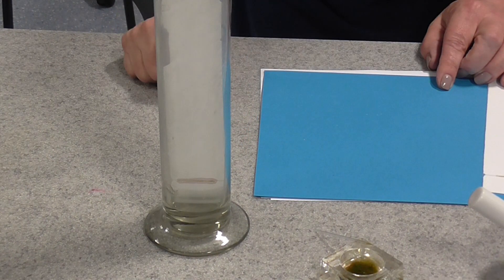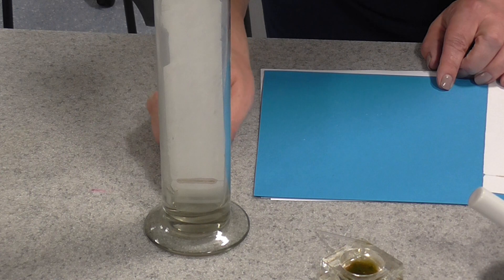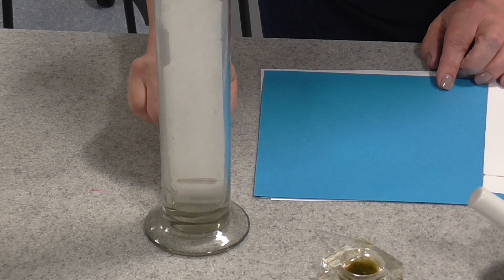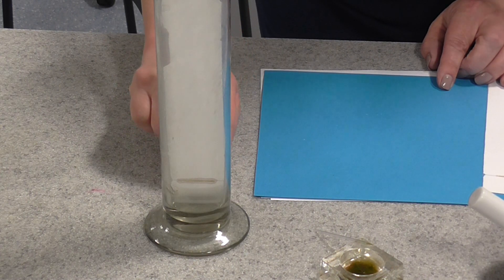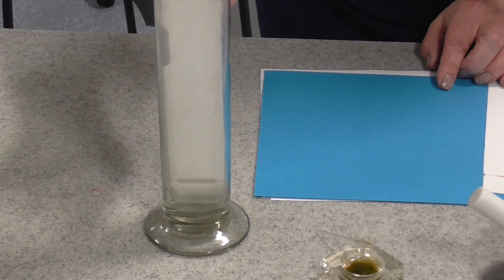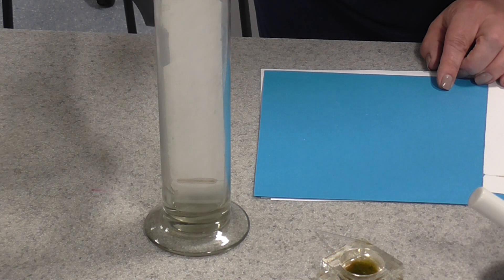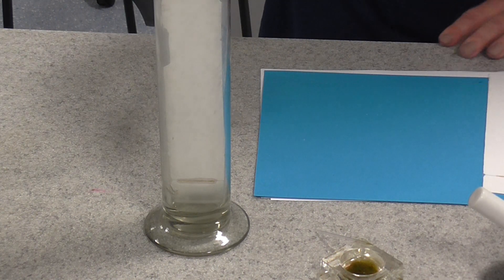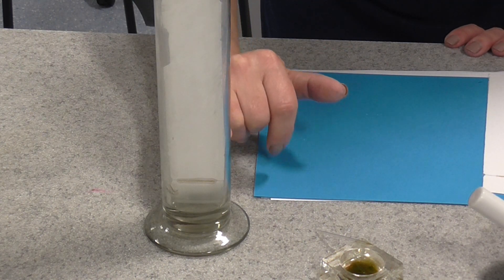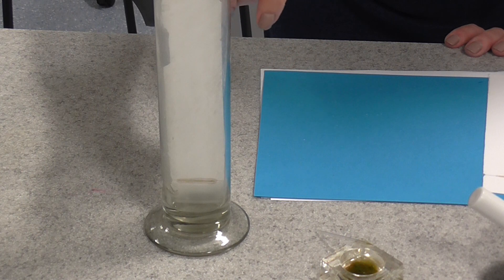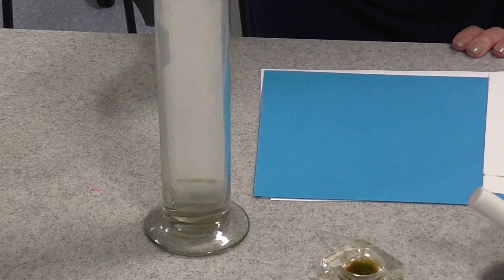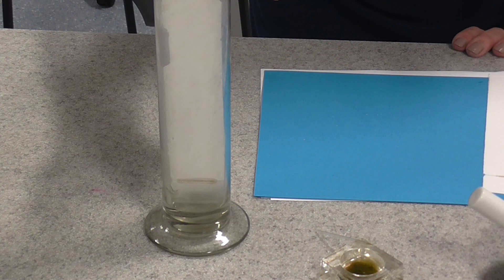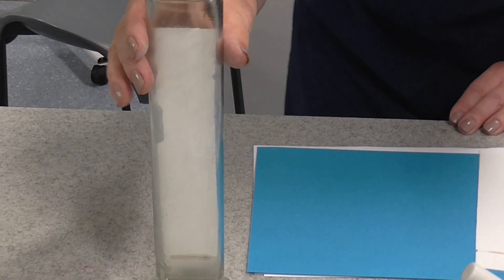Remember the TLC plate is what we call the stationary phase here. The mobile phase is our solvent which is going to dissolve the pigments in the plant extract and carry them up the stationary phase, carry them up the TLC plate. You're going to leave that now and watch it carefully until you see that the solvent has traveled all the way up to about maybe a centimeter or two from the top of the TLC strip.